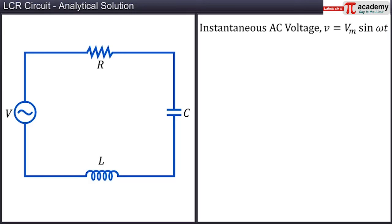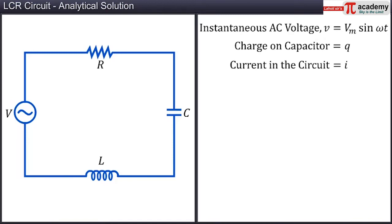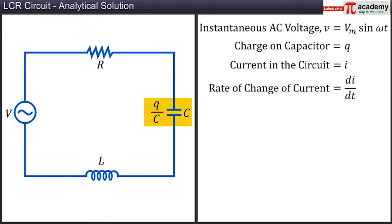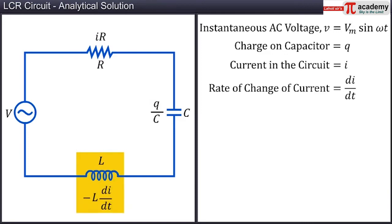AC voltage V is the instantaneous voltage existing in the circuit. At any instant of time, the charge on the capacitor is Q, the current in the circuit is I, and dI/dt represents the rate of change of current in the circuit. The instantaneous voltage across the capacitor is equal to Q by C, the voltage across the resistor is IR, and the induced EMF across the inductor is minus L dI/dt.